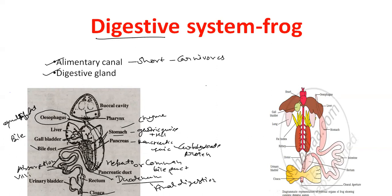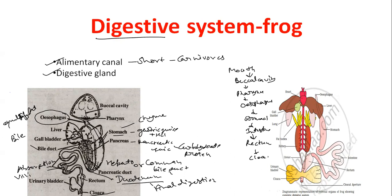So what is the sequence of digestive system in frog? First mouth, then buccal cavity, then pharynx, then esophagus, then stomach, then intestine, then rectum, then cloaca, and then cloaca aperture.